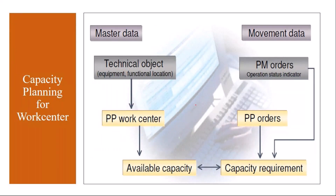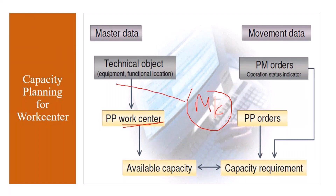In the PP module, a production machine is called a work center, whereas in the PM module it is called equipment. To have the integration, we need to link these two. Integration of equipment is a responsibility of the PM module — we are not going to do that configuration — but we do have to link them.